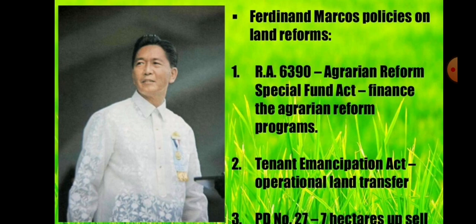Under Ferdinand Marcos, the policies included: RA 6390, the Agrarian Reform Special Fund Act to finance the Agrarian Reform Program — allocating funds for agrarian reform programs. Second, the Tenant Emancipation Act or Operational Land Transfer, and PD 27 or the 7-hectare upset limit. These were good laws on paper, but the question remains whether the funds were actually provided and properly used.